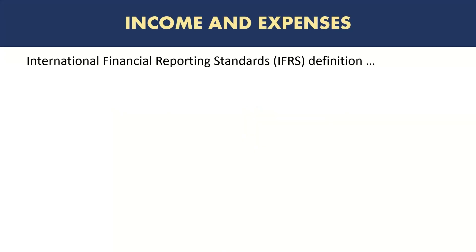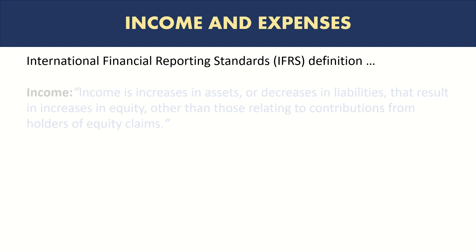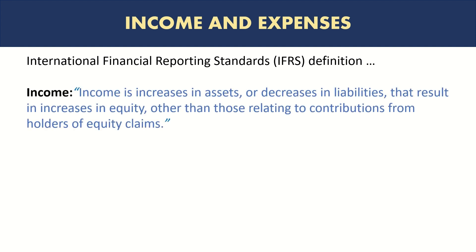We have looked at the balance sheet items — assets, liabilities, and equity. Now it's time to look at the income statement items: income and expenses. Let's look at the definition first. Income is an increase in assets or decrease in liabilities that results in increases in equity.